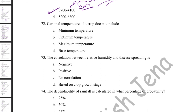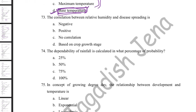Cardinal temperature of a crop includes minimum, optimum, and maximum temperature. It does not include base temperature — base temperature is the minimum temperature below which there is no crop growth. Relative humidity and disease spreading are highly positively correlated: higher relative humidity over the canopy increases disease risk. This is why grains must be dried before storage to prevent disease infestation.